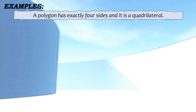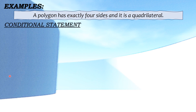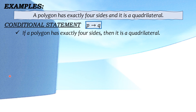So dito sa ating given statement, kung makapansin kayo, meron ulit tayong salitang 'and' — ibig sabihin, hinati ng word na 'and' ang dalawang phrase. So meron tayong unang phrase and then pangalawang phrase. Let us now proceed on the conditional statement. Conditional statement, dadagdagan lang natin ang word na 'if' at 'then'. Kaya magiging: if a polygon has exactly four sides, then it is a quadrilateral.